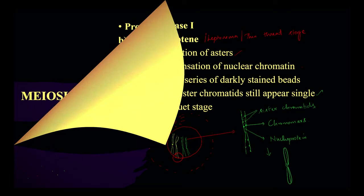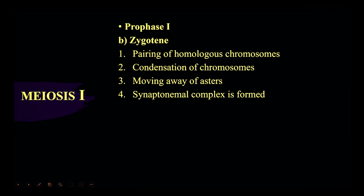Let's enter into zygotene, also called zygonema or leptotid stage. The first thing is pairing of homologous chromosomes takes place, which is called synapsis. There will also be condensation, and a synaptonemal complex is going to be formed — the two sister chromatids remain attached with a nucleoprotein, forming a complex called synaptonemal complex.